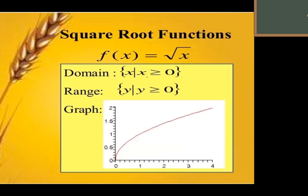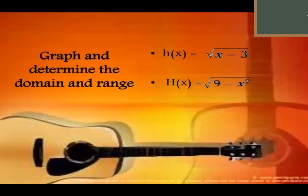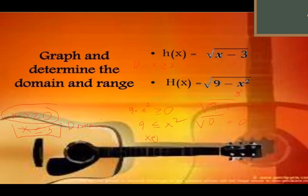Square root function: remember, there's no square root of a negative number. So the domain must be greater than or equal to 0, and the range is also greater than or equal to 0. For example, the square root of (x − 3): x must be greater than or equal to 3. If x = 1, then 1 − 3 = negative 2, and there's no square root of negative 2. So your domain is x ≥ 3, and your range is y ≥ 0.